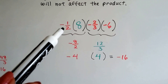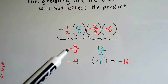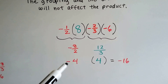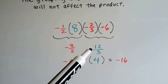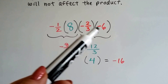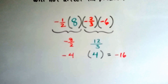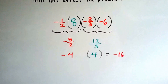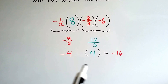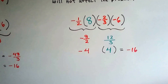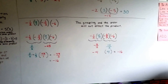We could also multiply the negative one-half by the 8 and get a negative 8 halves because they're unlike signs, which is a negative 4. Then multiply the negative 2 thirds to the negative 6 and get a positive 12 over 3 because they're both negative signs, which makes a positive. That 12 over 3 becomes a 4. When we multiply the negative 4 to the positive 4, they're unlike signs, so we get a negative 16. It didn't matter the grouping or the order — it didn't affect the product.